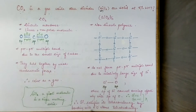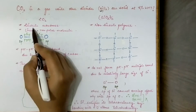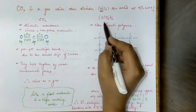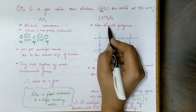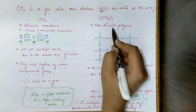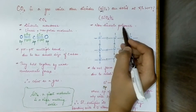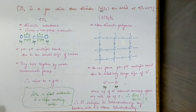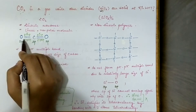To answer this question, we need to understand the structure of carbon dioxide and silicon dioxide. Carbon dioxide is basically a discrete monomer, but silicon dioxide exists as a non-discrete polymer — a polymeric arrangement of silicon and oxygen atoms.